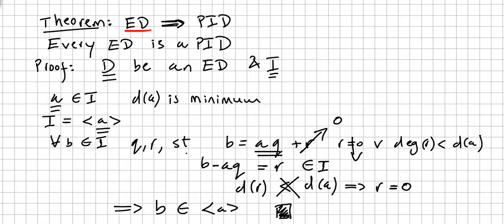So every Euclidean domain, if you are in a Euclidean domain, any element, which is this b, this arbitrary b, will be in an ideal, and in a particular ideal, the principal ideal. This proves the theorem: every Euclidean domain is a principal ideal domain.